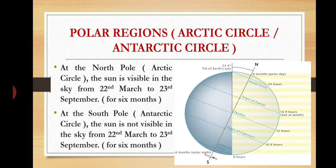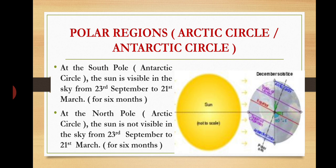Polar region: there are two poles — the North Pole and the South Pole. At the North Pole, the Arctic Circle, the Sun is visible in the sky from 22nd March to 23rd September — for 6 months. At the South Pole, the Antarctic Circle, the Sun is not visible in the sky from 22nd March to 23rd September — for 6 months. At the North Pole, the Arctic Circle, the Sun is not visible in the sky from 23rd September to 21st March — for 6 months.